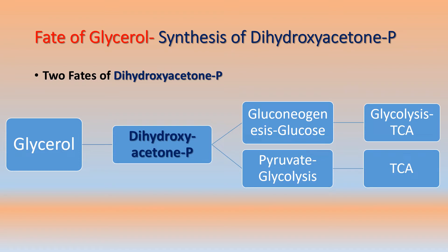Dihydroxyacetone phosphate is an intermediate during the glycolytic pathway. It is converted into pyruvate, then pyruvate is converted into acetyl-CoA, and then utilized through the TCA cycle. This is how glycerol is utilized in the body: first its conversion into glycerol-3-phosphate, then into dihydroxyacetone phosphate, and then either its conversion into glucose or into pyruvate.